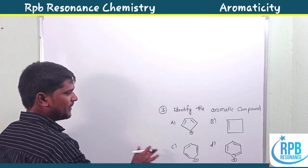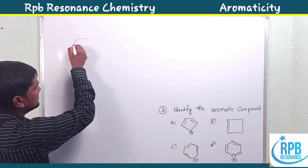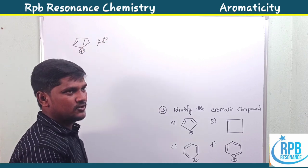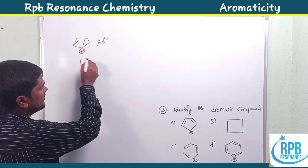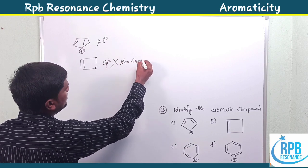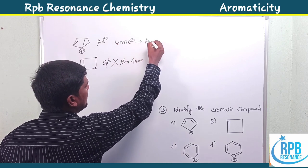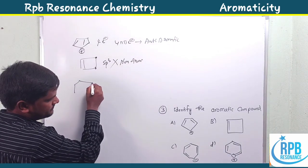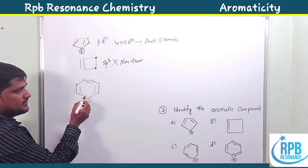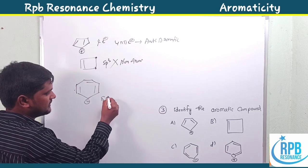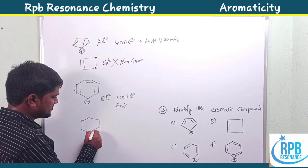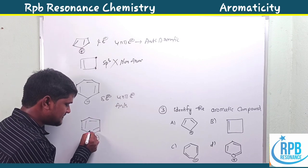Question three from JEE 2014: identify the aromatic compound. Option one: there are sp3 carbons present — sp2 and sp3 mixed — so it is non-aromatic. Option two: four electrons, coming under the 4n system — so it is anti-aromatic. Option three is the tropylium anion — a seven-membered ring with three double bonds giving six electrons plus two electrons from the anion, totaling eight electrons — which is a 4n system, making it anti-aromatic.